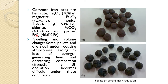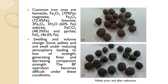Because when you do the mining of iron ore, lots of fines are generated. Usually you make pellets from these fines. Some pellets and even ore swell under reducing atmosphere, leading to loss of strength, generating fines, and decreasing compaction strength. So blast furnace operation becomes difficult under these conditions.